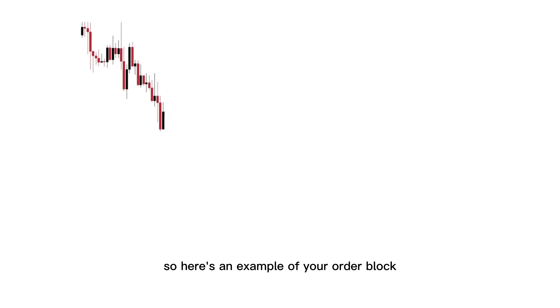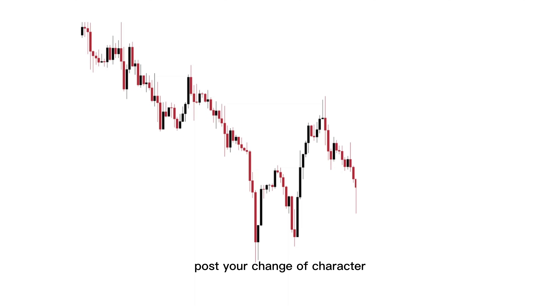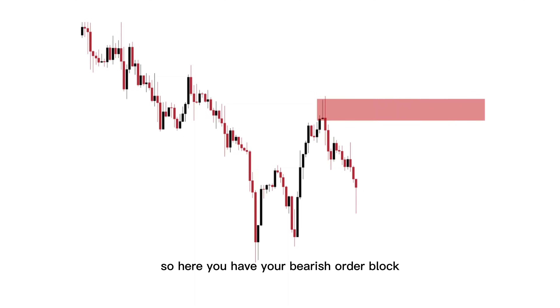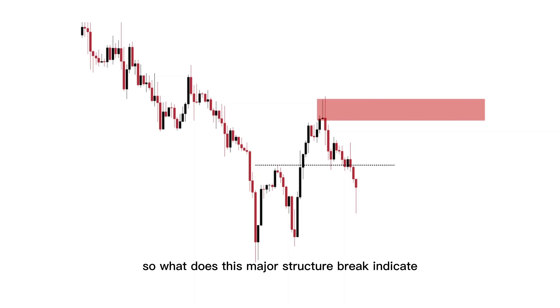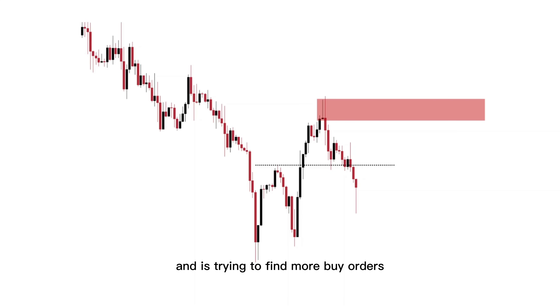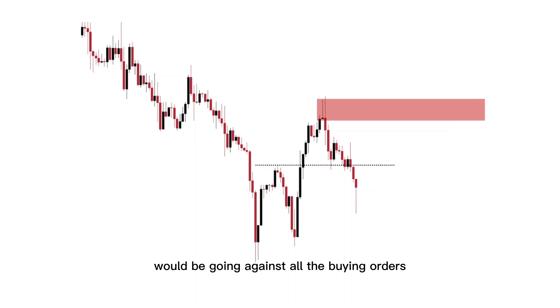Here's an example of your order block post your change of character. You have your bearish order block, and this order block occurred after your major structure break. So what does this major structure break indicate? It indicates that price no longer wants to be bearish and is trying to find more buy orders to start a bullish cycle. So selling into this would be going against all the buying orders.